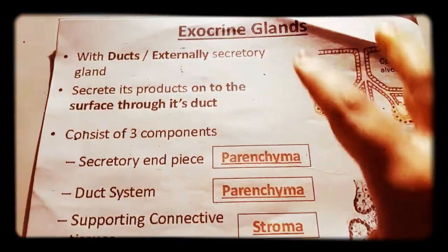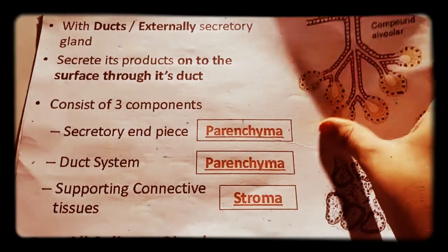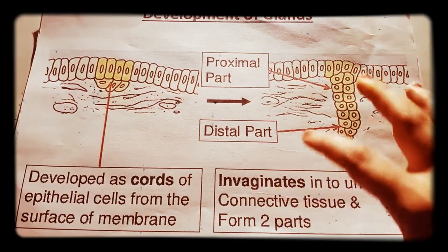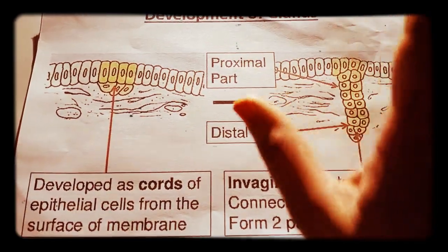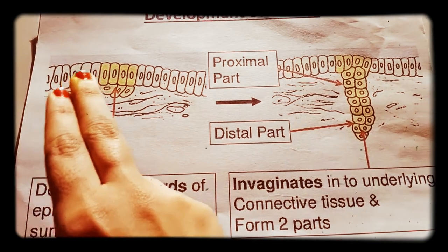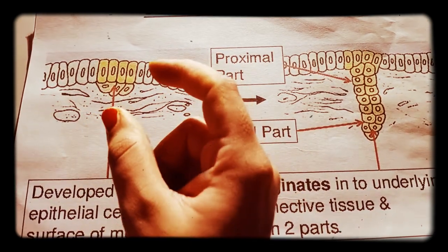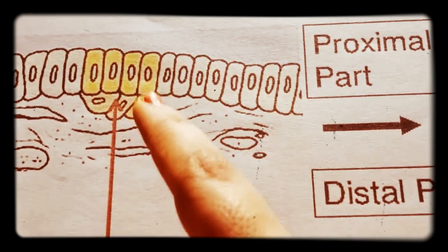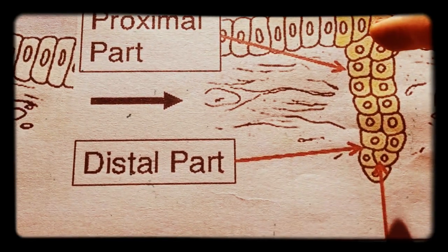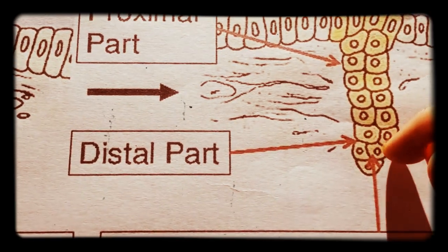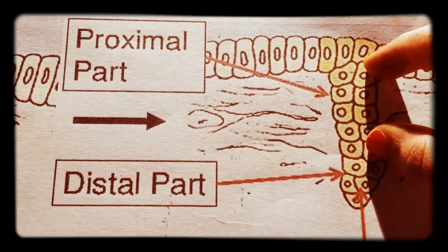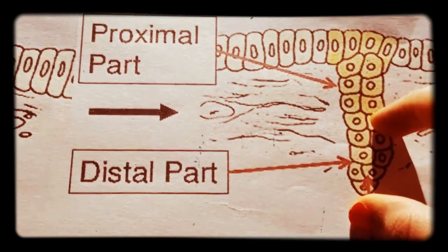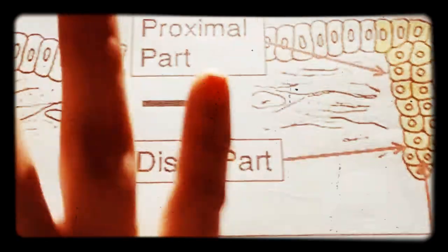An example of exocrine glands is our salivary glands. In the development of glands, some areas of epithelial cells proliferate and form a cord-like structure. The proximal part of this cord becomes the duct system, and the distal part becomes the secretory unit — as seen in exocrine glands.